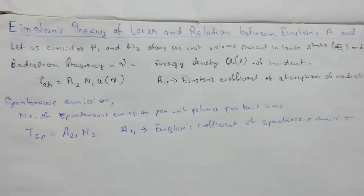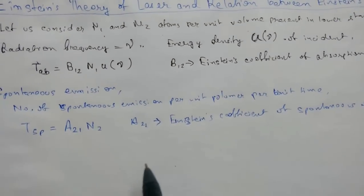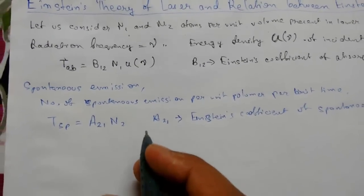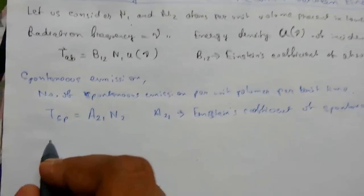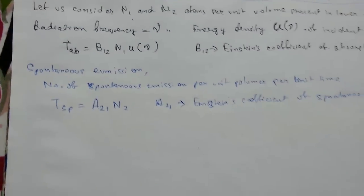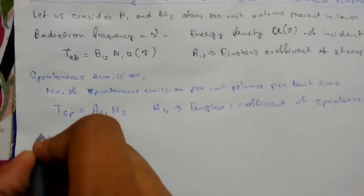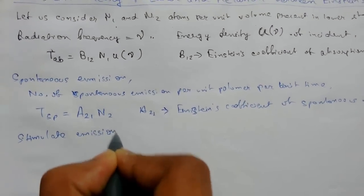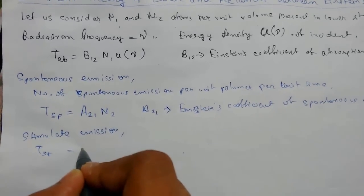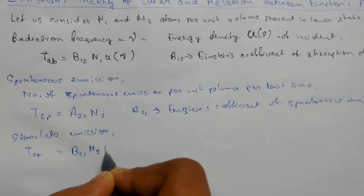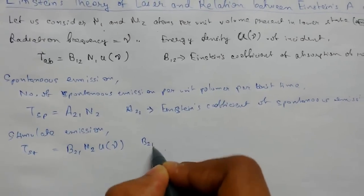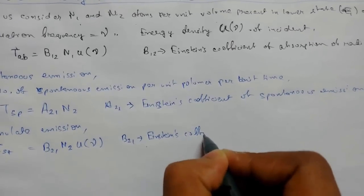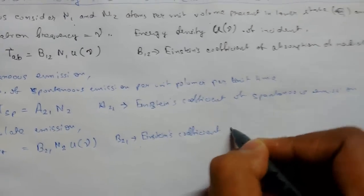Now n2 atoms in the metastable state, under the influence of a stimulating photon, will undergo stimulated emission. Stimulated emission depends on both the number of atoms per unit volume in the upper state and the energy density. So for stimulated emission: T_ST = B21 * n2 * u(mu), where B21 is Einstein's coefficient of stimulated emission.